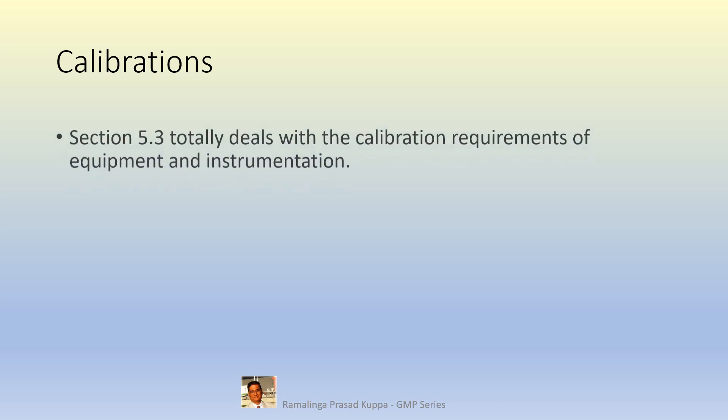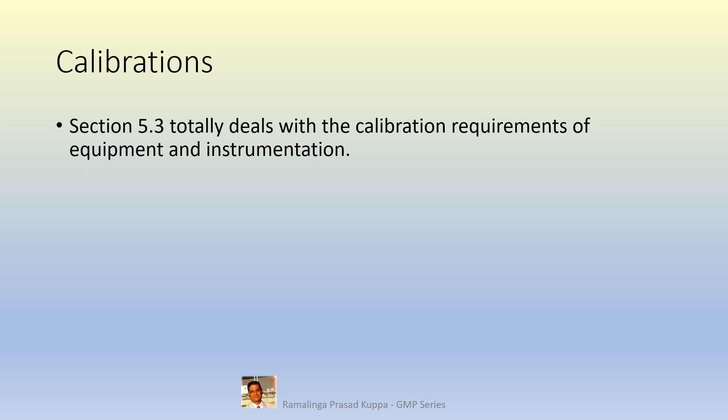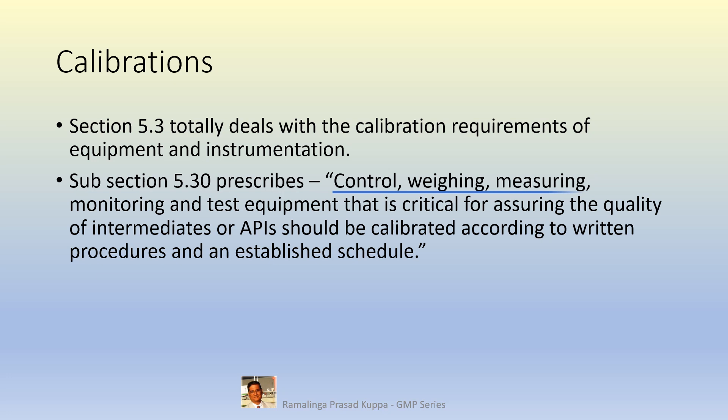Section 5.3 totally deals with calibration requirements of equipment and instrumentation. Calibrations are also part of the maintenance activity to ensure that the instruments connected to the equipment are functioning as expected. Subsection 5.30 prescribes control, weighing, measuring, monitoring and test equipment that is critical for assuring the quality of intermediates or APIs should be calibrated according to written procedures and an established schedule. All controls, weighing equipment, flow measuring equipment, monitoring equipment like online pH meters, temperature gauges, pressure gauges, and testing equipment in the QC laboratory should be calibrated as scientifically justified.